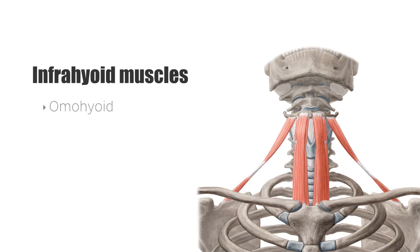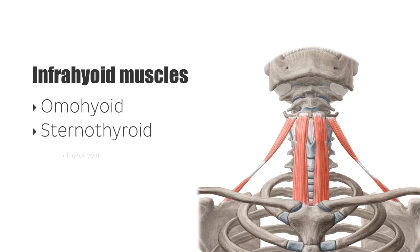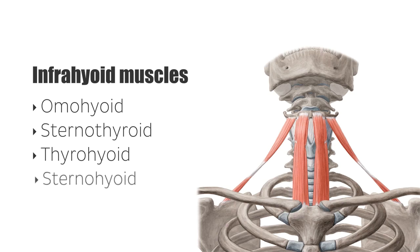The four muscles are the omohyoid, the sternothyroid, the thyrohyoid, and the sternohyoid. They have complex names but throughout this tutorial we're going to clarify their names. You can even see that the names really help you remember the different attachment points that these muscles will have.